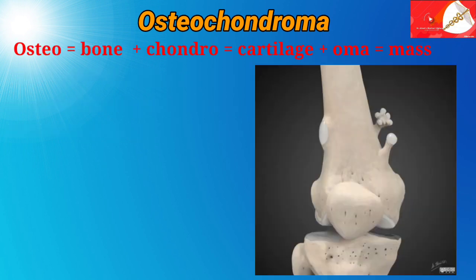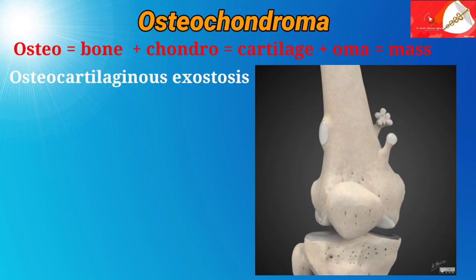Osteochondroma is derived from three words: osteo means bone, chondro means cartilage, and oma means mass. In other words, we may say new bone growth on the existing bone along with cartilage, i.e. exostosis. But this cartilage cap makes it distinct from other exostoses.